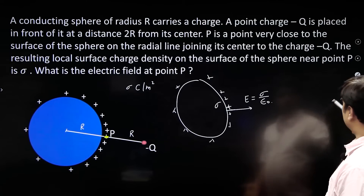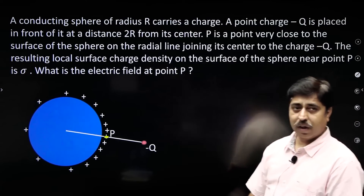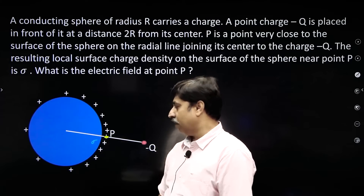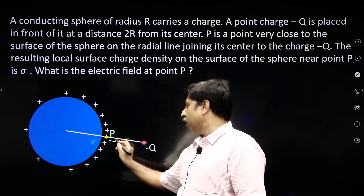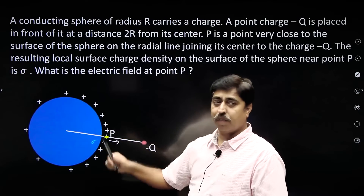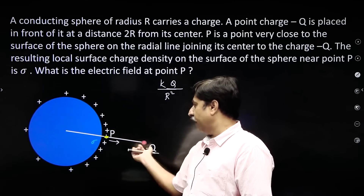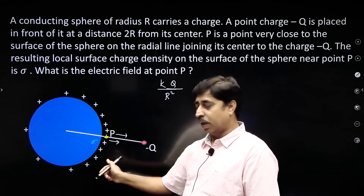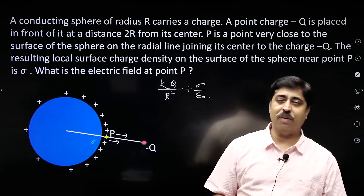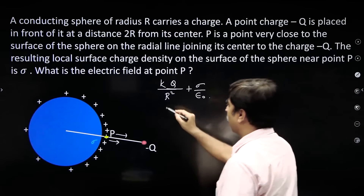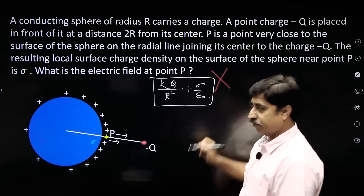Many of you will give an answer like this: if the local surface charge density is sigma, then the field produced because of the charge on the conductor is sigma by epsilon naught, and the field produced because of minus q is kq by r squared. So you will add these two and say the electric field at point P is this. If you are saying this, then you have misunderstood the concept. This is incorrect.